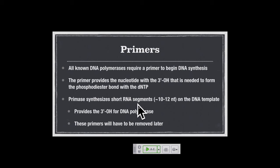Think of it like a molecular trailer hitch. The DNA polymerase needs a double-stranded structure with a 3' hydroxyl. These primers don't have to be very long — maybe 10 or 12 nucleotides — but you need this stable double-stranded structure with a 3' hydroxyl. That is where the DNA polymerase can form the phosphodiester bond with the first nucleotide. In E. coli, there is an enzyme called the primase, which is an RNA polymerase — its sole purpose is to make these short primers used during DNA synthesis.